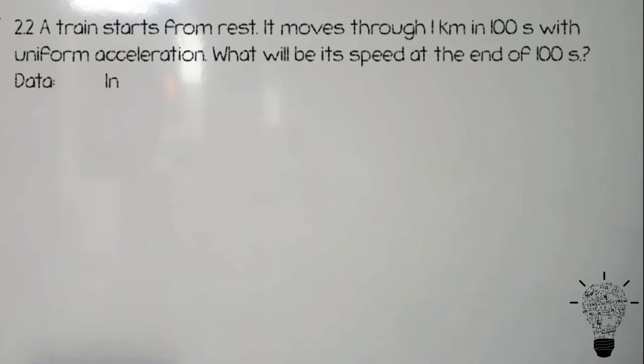Starts from rest means initial velocity is 0. Distance given is 1 km, km means 1000 m, and time given is 100 seconds.